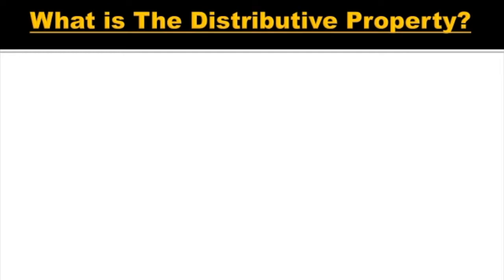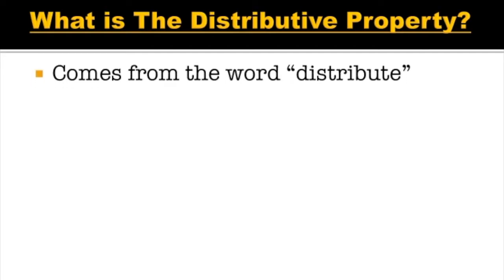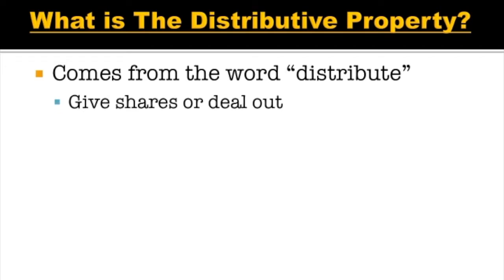So first of all, what exactly is the distributive property? Well, it comes from the word distribute. And what does the word distribute mean? The word distribute means to give shares or deal out.